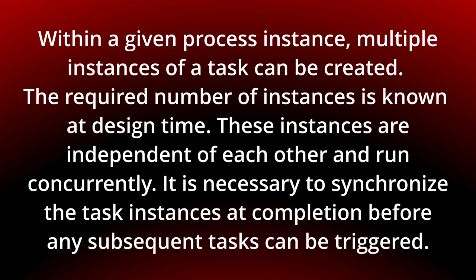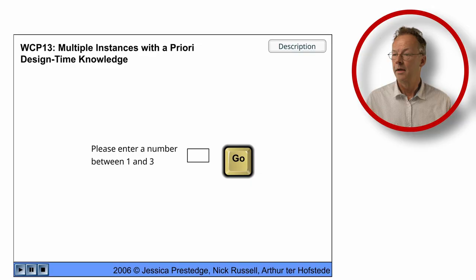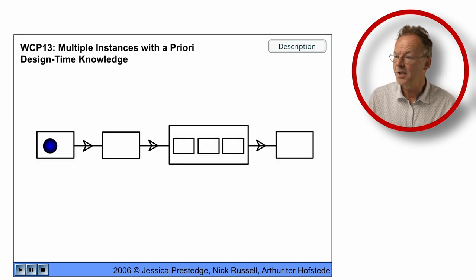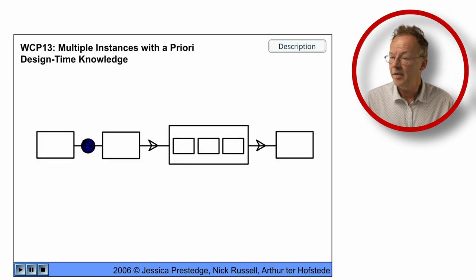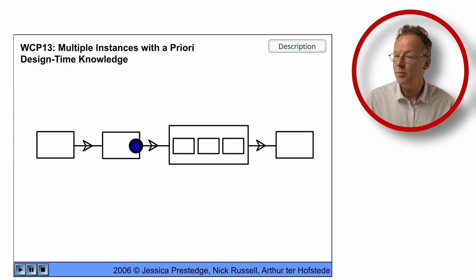You can see the behavior in the original flash animation. Okay, so we can enter a number here and we enter three and then the process starts. And at the moment of the multiple instance task, we have these three instances and we can now finish them in any order.